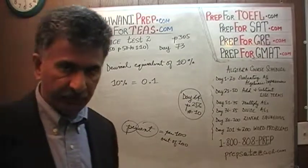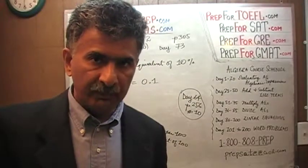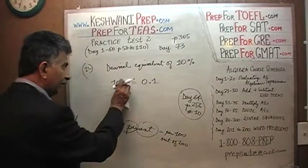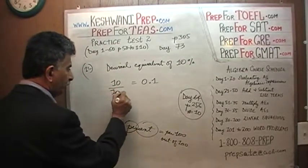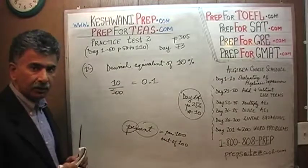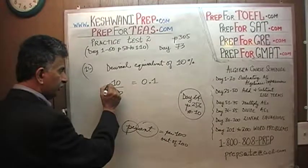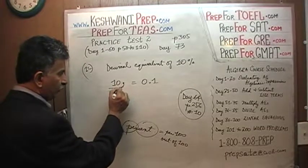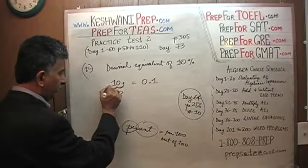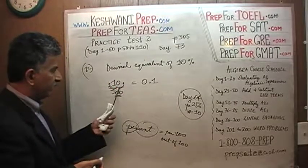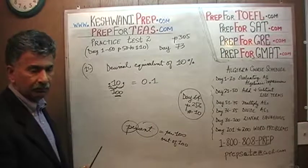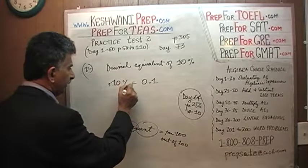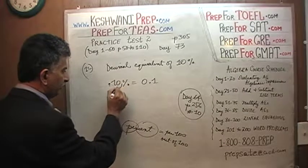37% means 37 out of 100. 4.7% means 4.7 out of 100. 10% means 10 out of 100. When you divide 10 by 100, you take your 10 and move the decimal place two places to the left — one and two — and it ends up as 0.1. That's why 10% becomes 0.1 in decimal. We always move the decimal two places.